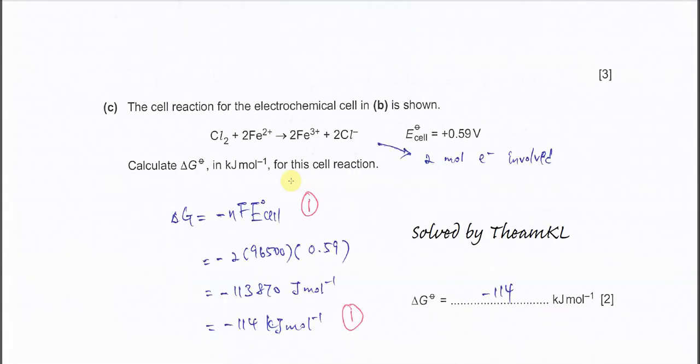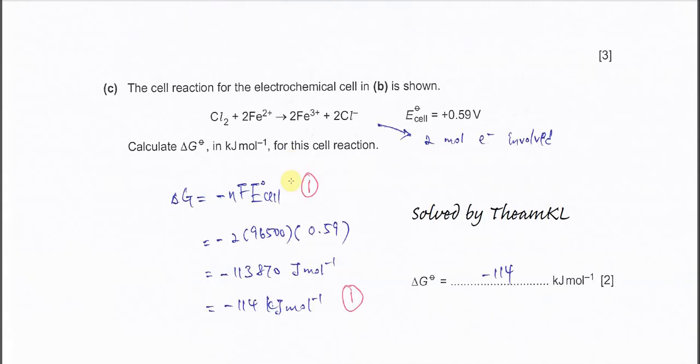Part C: The cell reaction for the electrochemical cell in B is shown. This tells us the chlorine must reduce to chloride. So the gas electrode must be the cathode, and this Fe²⁺/Fe³⁺ half-cell must be the anode because it undergoes oxidation from +2 to +3. The E°cell is 0.59 volt.